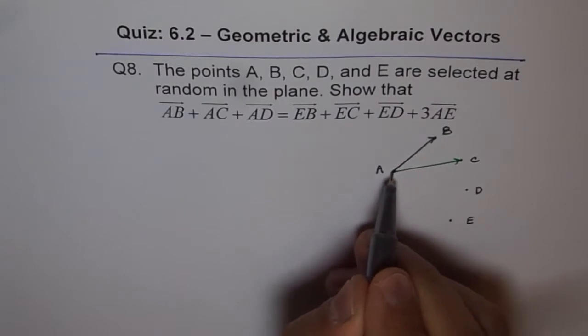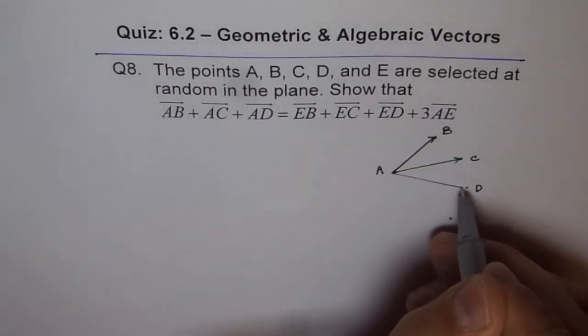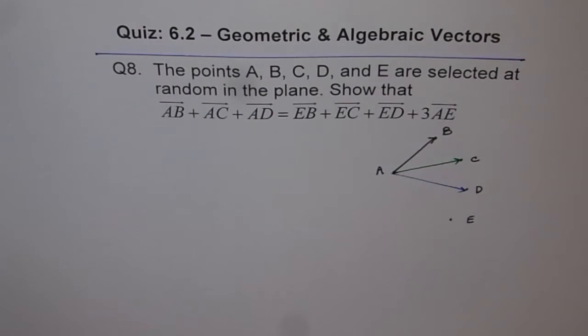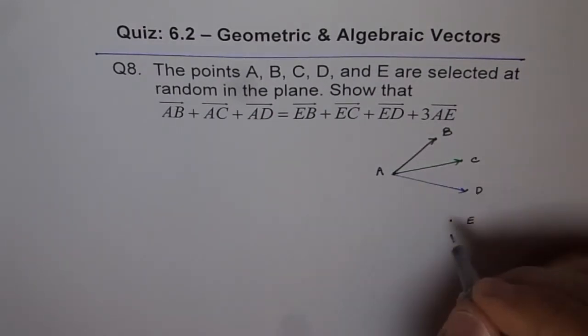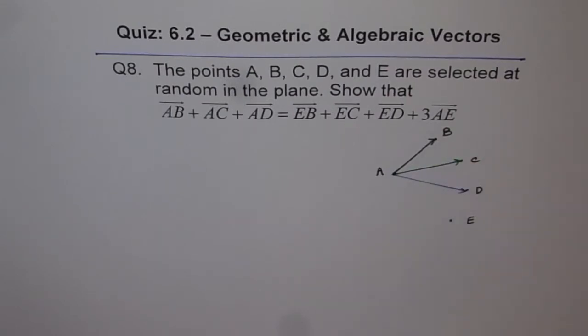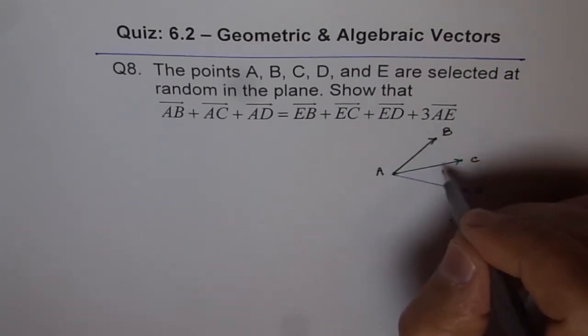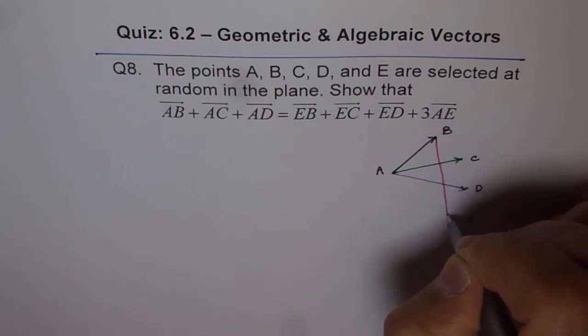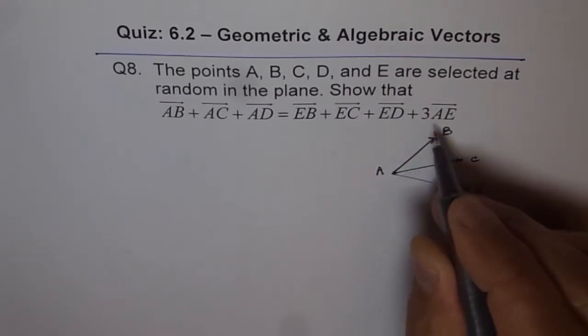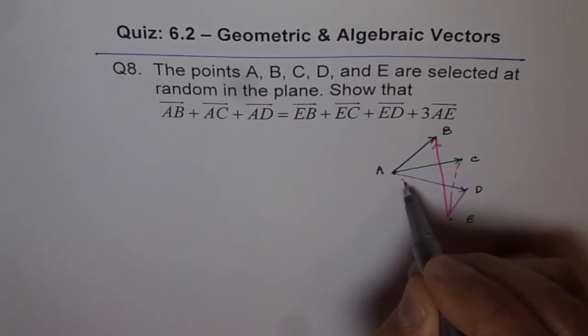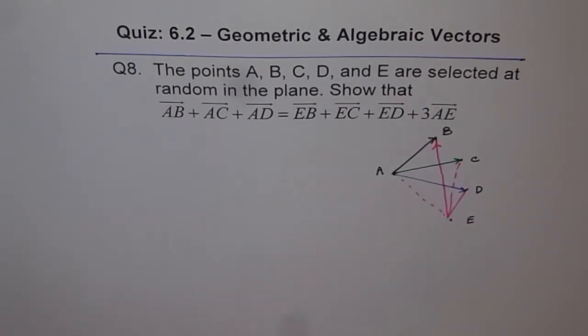So we are considering these three. Their sum is equal to sum from E. So from E to B, from E we are connecting all other points: E to B, then E to C, and from E to D and 3 times A to E. So A to E is also there. These are different connections which we are going to deal with.